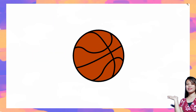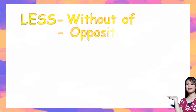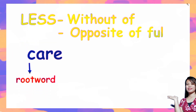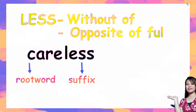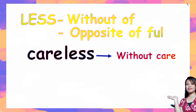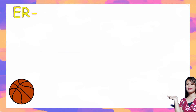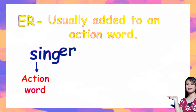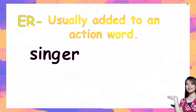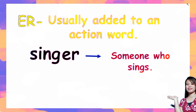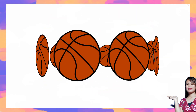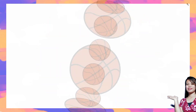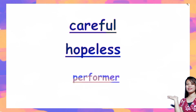The next suffix is 'less,' which means without, or the opposite of full. For example, the root word 'care' plus the suffix 'less' forms 'careless,' which means without care. The next suffix is 'er.' It is usually added to an action word. For example, 'sing' plus 'er' forms 'singer,' which means someone who sings. Other examples with suffixes include: careful, hopeless, performer.